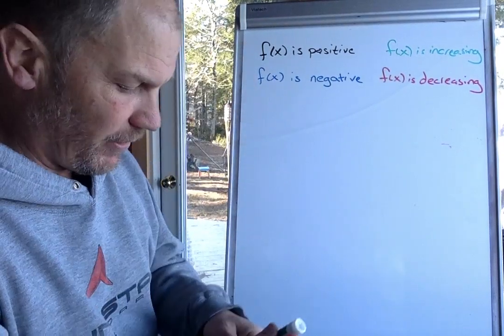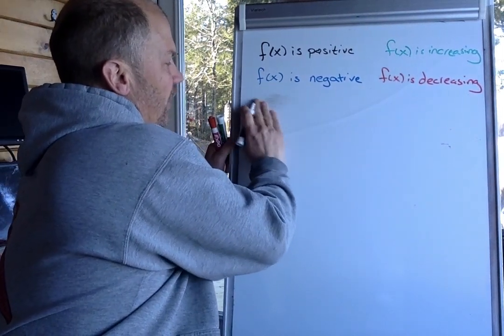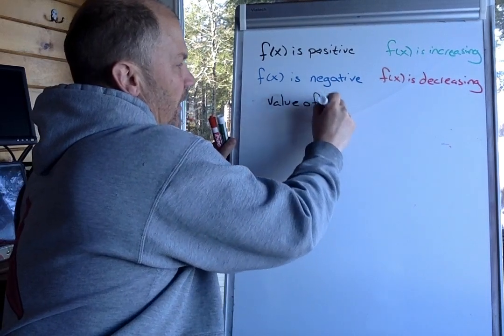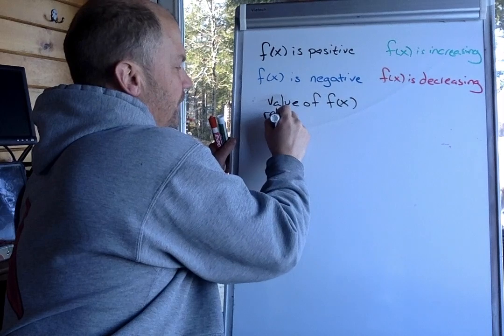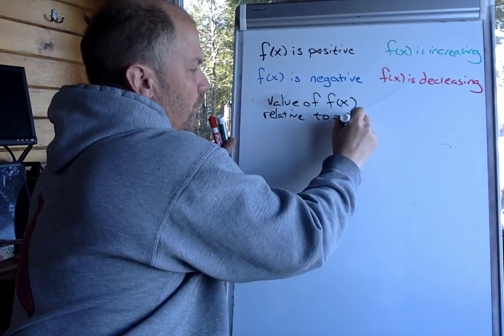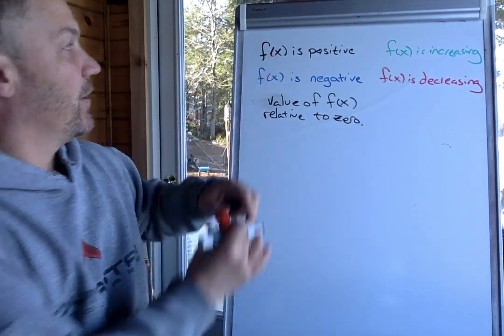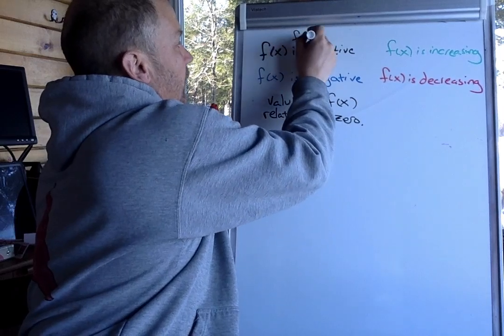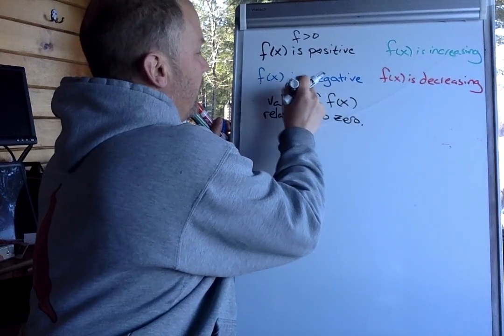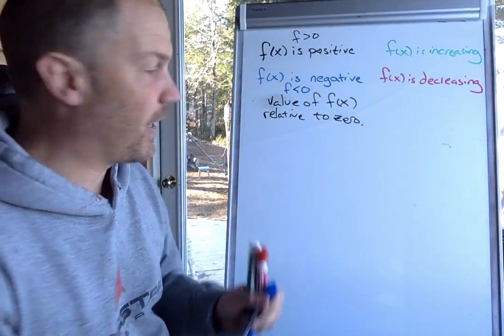This over here, whether something is positive or negative, is talking about the value of f of x relative to zero. If something is positive, f of x is greater than zero, and if something is negative, f is less than zero. So that's talking about its position on the graph.